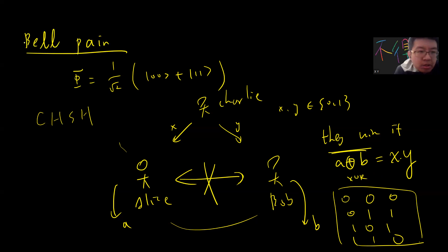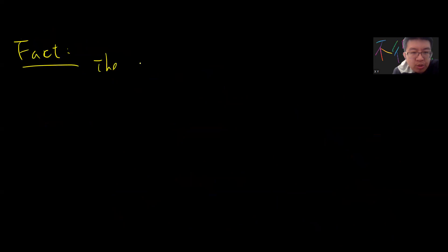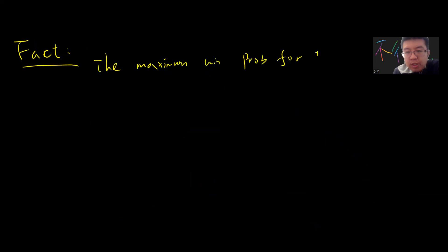Here is a fact I will not fully prove, but you can think about it: the maximum winning probability for Alice and Bob in the classical setting — where they cannot communicate — is 75%.